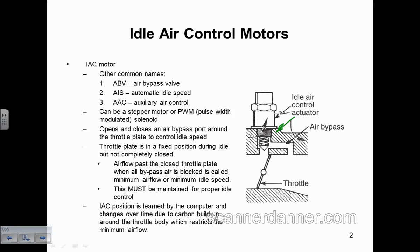Idle speed controls is a difficult subject because over the years they've changed how they control idle speed. In this design, idle speed is controlled by a bypass around the throttle plate. Along with this bypass — pay attention to this — there is a small amount of air that passes past the throttle plate itself. This air that moves past the closed throttle plate would be called minimum air flow or minimum idle speed.